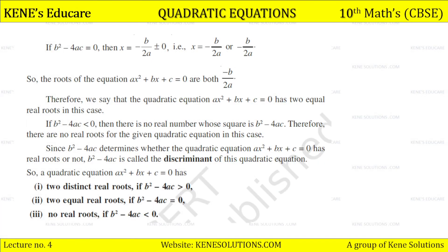If b²−4ac is equal to 0, then x = −b/2a. Both roots come out as −b/2a — the same root. So the roots of the equation ax² + bx + c = 0 are both −b/2a. Therefore we say the quadratic equation has two equal real roots in this case.